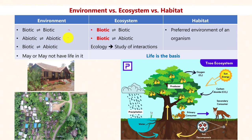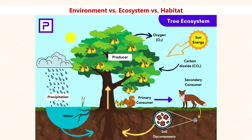Let us now look at the core aspects of the chapter: what is environment, ecosystem, and habitat? We have understood what abiotic and biotic factors are. To understand the definitions of environment, ecosystem, and habitat, we need to know the interactions that take place between these components. Let us understand these interactions with an example of a tree ecosystem.